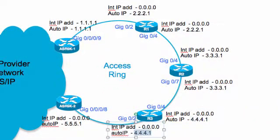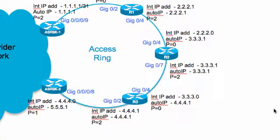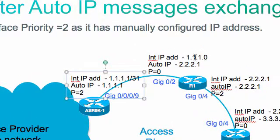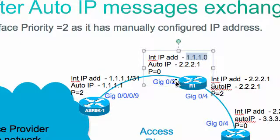Once auto IP kicks in, IP address assignment happens across the ring. The seed router has a working interface IP address of 1.1.1.x, which was manually configured, and the auto IP address is also 1.1.1.x. This makes it the owner on that interface — highest priority — and it assigns the IP address 1.1.0 to R1's interface gig0/2.